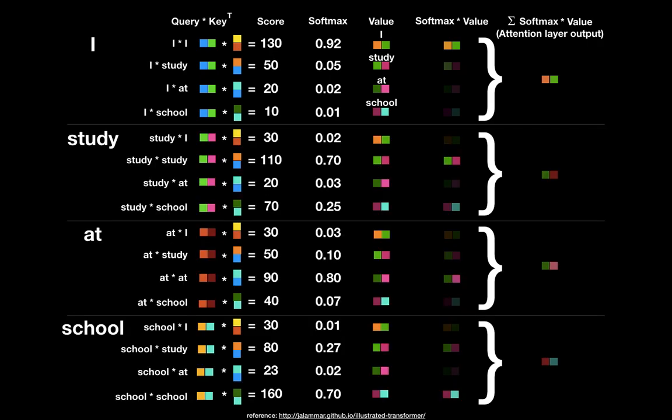Now you remember word embeddings are vectors and the sentence as input is a matrix, so we can get attention layer output at once by matrix multiplication. This is the power of parallelization.